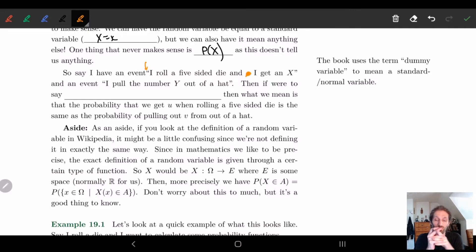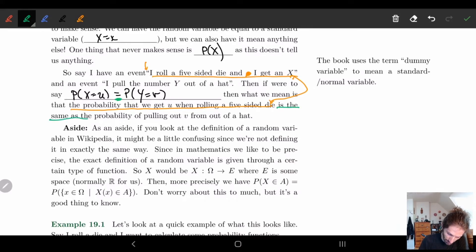So what would happen if I were to say, I have these two events, that's okay. What happens if I say X is equal to U is equal to the probability that Y is equal to V? That's a little weird, right? But all I'm saying is that you just have to read this: the probability that we get U when rolling a five-sided die, this is coming from I roll a five-sided die and I get an X, is equal to, is the same as the probability of pulling out a V from out of the hat. This is this one. And that's it.